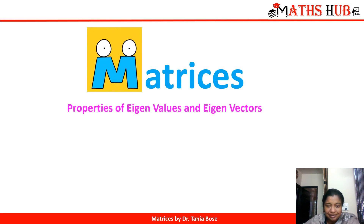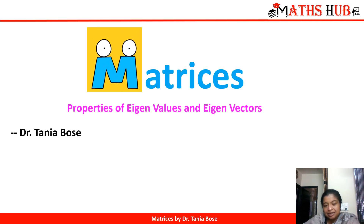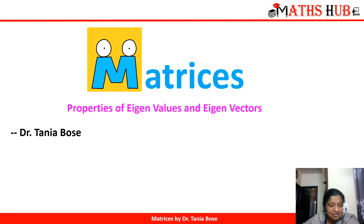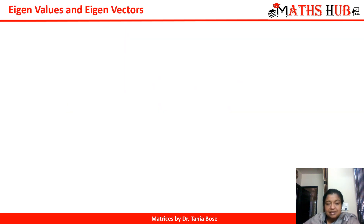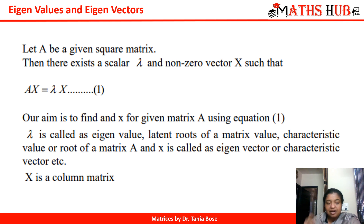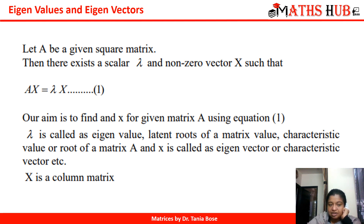Hello students and welcome to my channel MathsHub. Today in this video I will talk about the properties of eigenvalues and eigenvectors. In my last video I covered the geometrical interpretation of eigenvalues and eigenvectors. Before we go to the computations of these values and vectors, we will see what are the properties. As a recap, whenever we have a matrix A and multiply it with a column vector x, we get back lambda times x — lambda is called the eigenvalue and x is called the eigenvector.